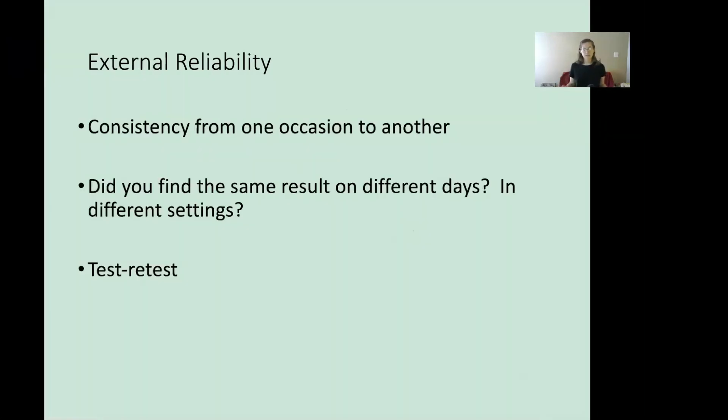External reliability is when we have consistency from one situation to another one. So, we're asking ourselves, did we find the same result on different days and in different settings? There are two types of this we're going to look at. One is called test-retest reliability, which we've already talked about. And we'll also discuss inter-rater reliability.